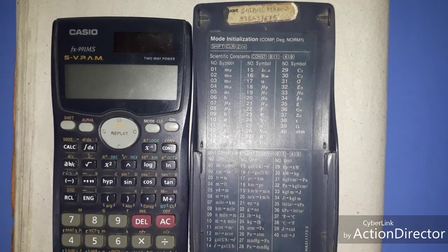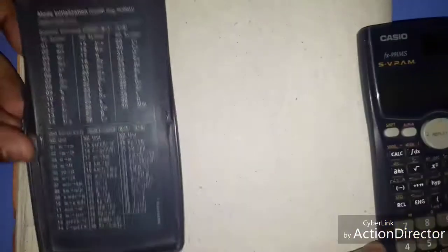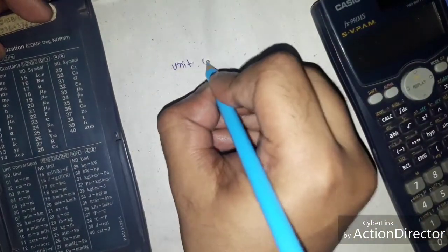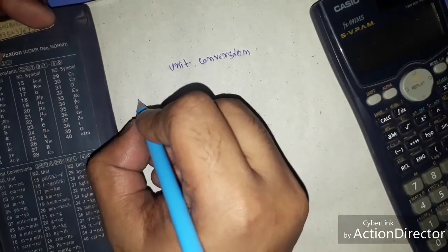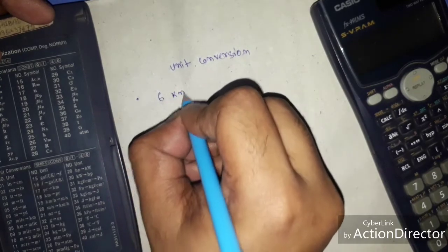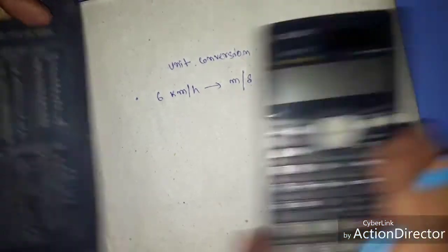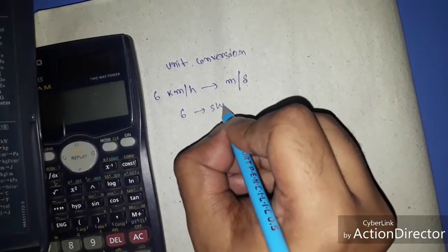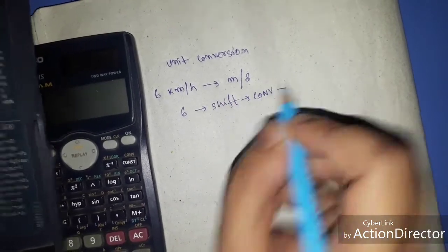So let's try with one example. Unit conversion. If we want to convert 6 kilometer per hour to meter per second. So first step 6, after that shift, after that Conv and its respective number.